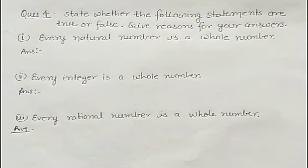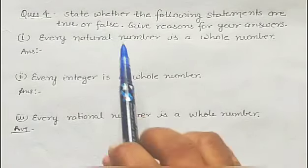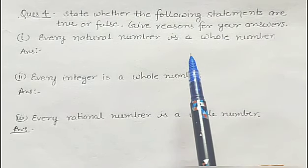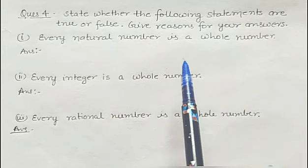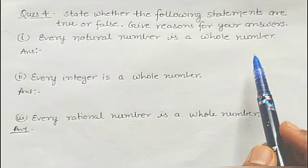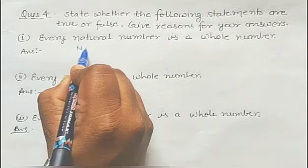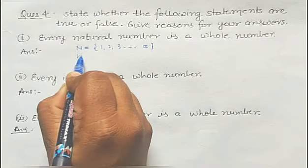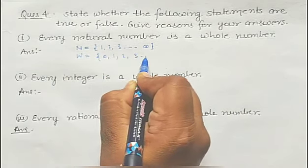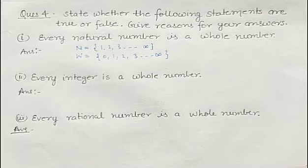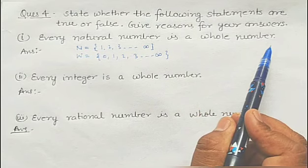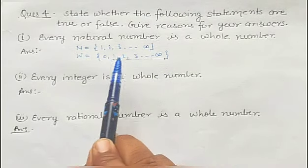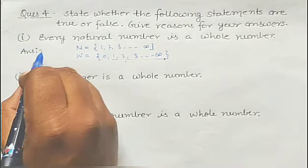Question number 4: state whether the following statements are true or false and give reasons. If you have studied the definitions well, you can simply give the answers. The first part: every natural number is a whole number. Natural numbers are 1, 2, 3 and so on till infinity. Whole numbers are 0, 1, 2, 3 and so on till infinity. Since every natural number appears in the whole numbers collection, this statement is true.